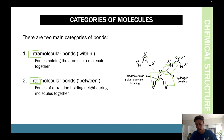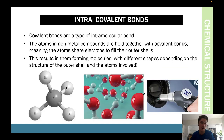The first and only intramolecular bond you need to know is covalent bonding. The atoms in non-metal compounds are held together with covalent bonds, meaning the atoms share electrons to fill their outer shells. This results in molecules forming different shapes depending on the structures of the outer shell and atoms, which we just discussed.